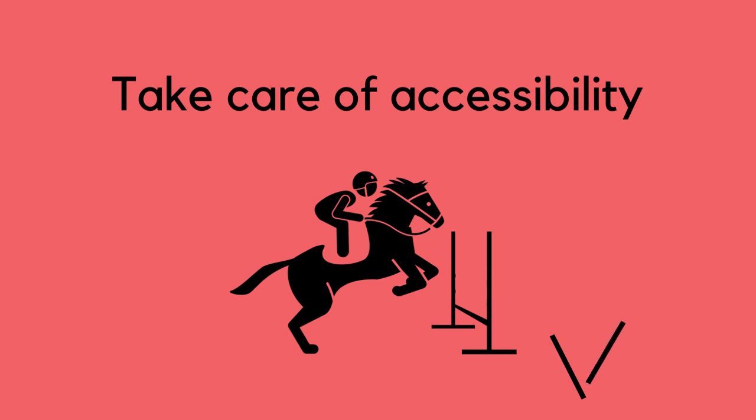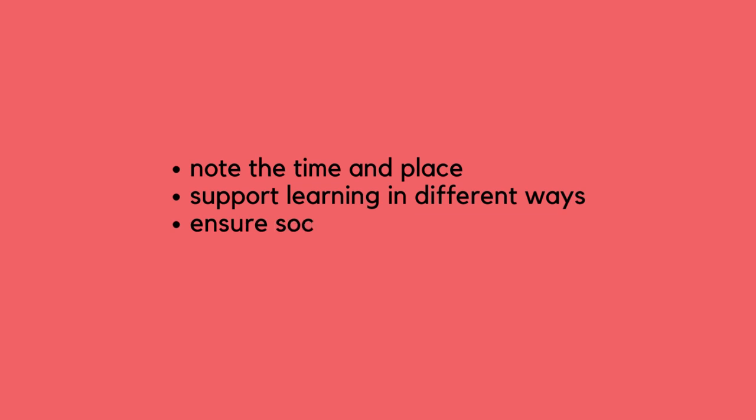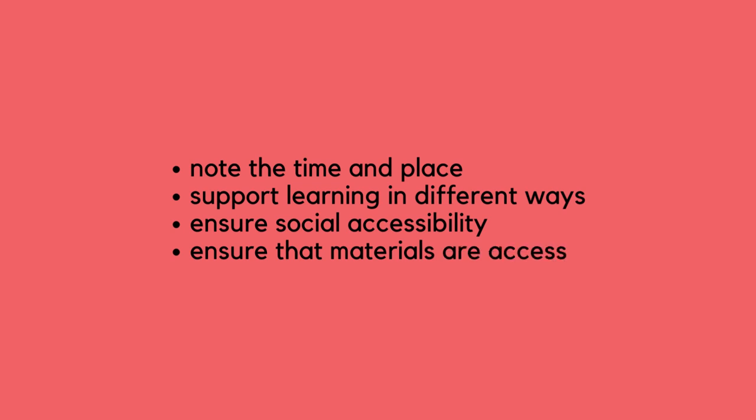Take care of accessibility. Try to make the time and place of media education activities easily accessible to participants. Ensure that everyone can participate and that the space or online environment is accessible. Where appropriate, make use of learning aids and visualization tools to support the activity. Ensure social accessibility — for example, consider how to promote inclusion where exclusion is due to discrimination or fear of discrimination. Where appropriate, organize specific groups for minority groups.